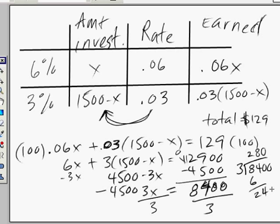And bring down... All right, so 3 goes into 8,400, 2,800 times. So that is the value of x. x equals 2,800.